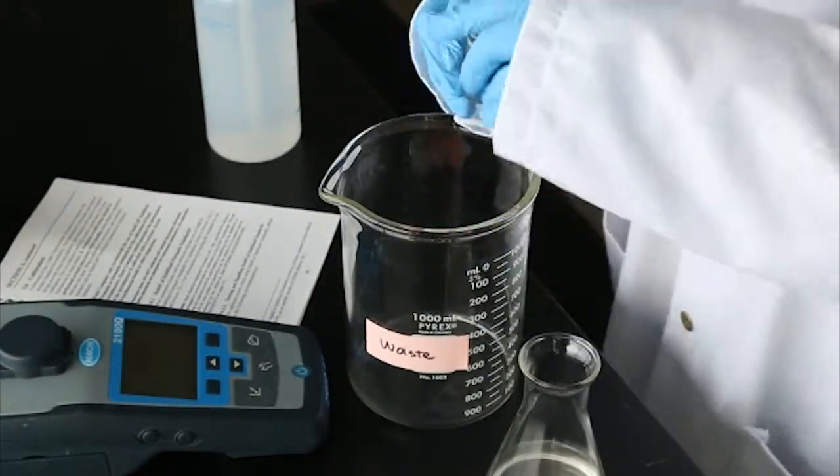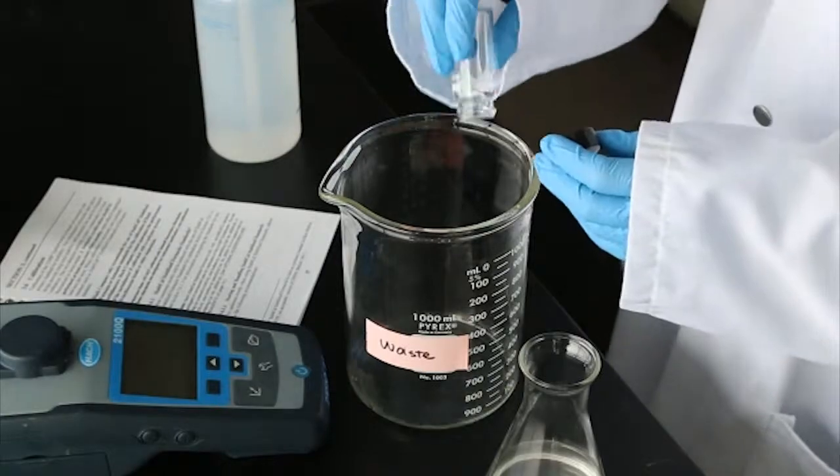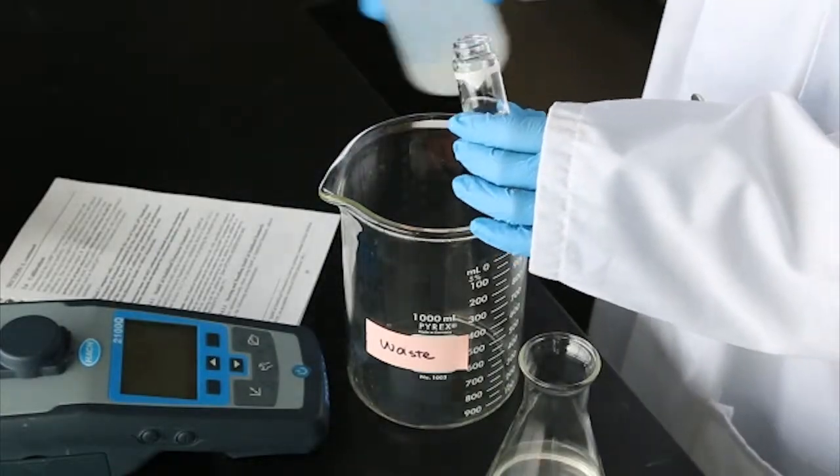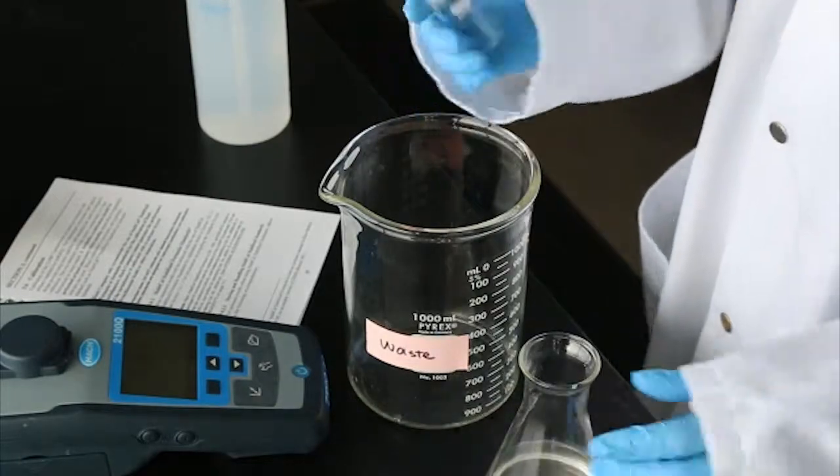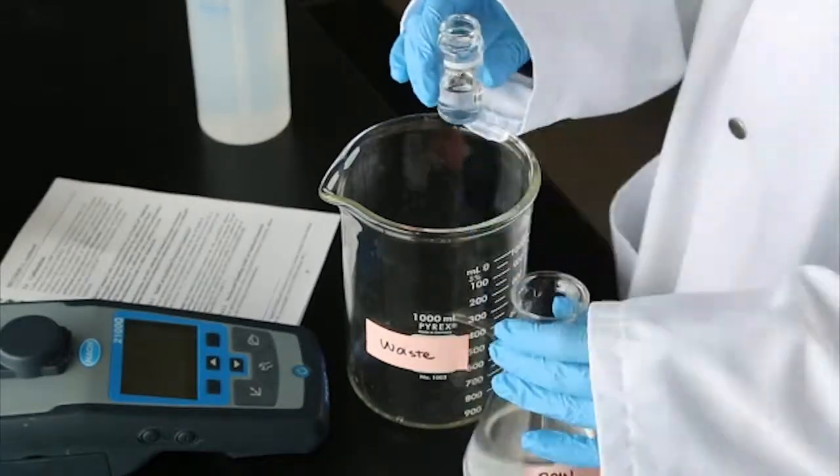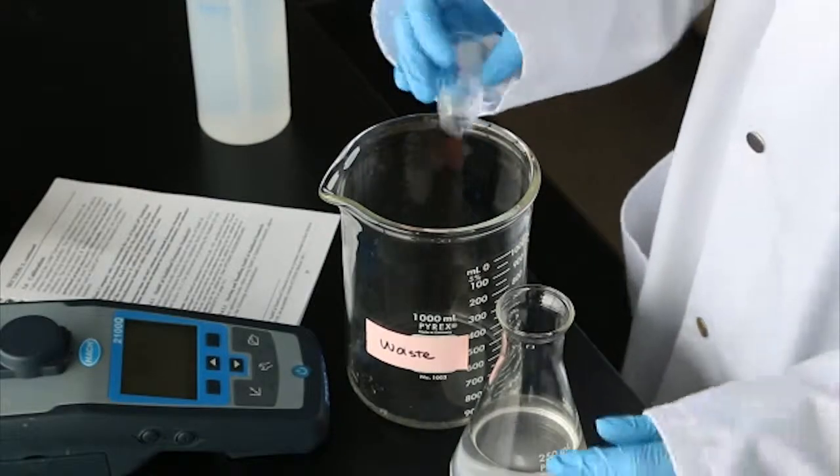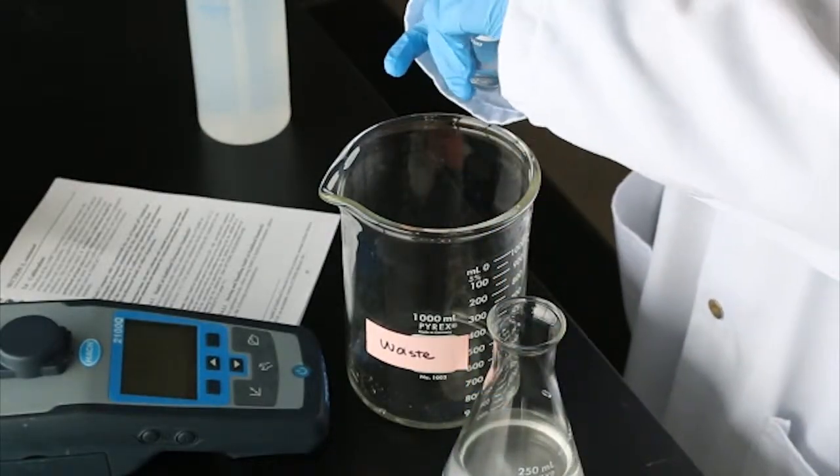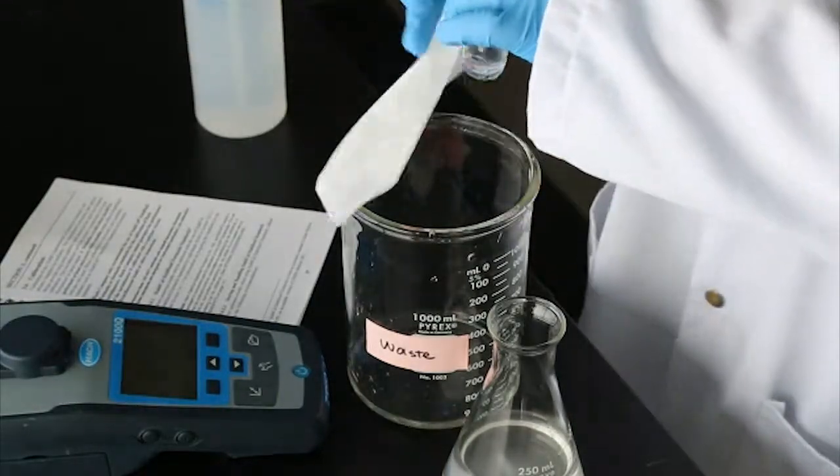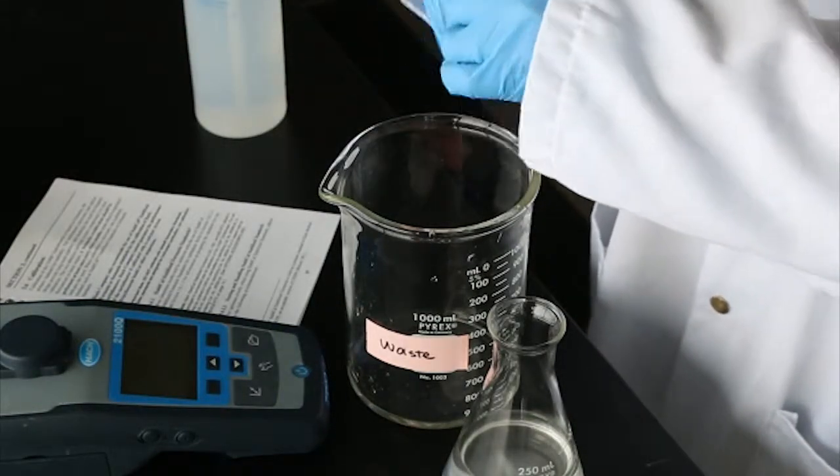Clean the inside and outside of the sample cells thoroughly with distilled or deionized water. Condition and fill the cell with the sample water. Make sure to handle cells only by the lid or wear gloves to avoid dirt and fingerprints on the glass.